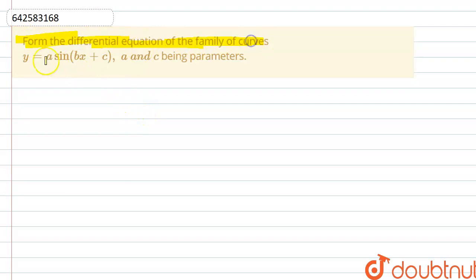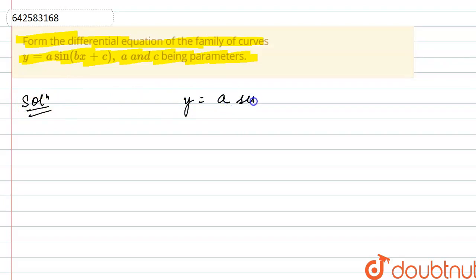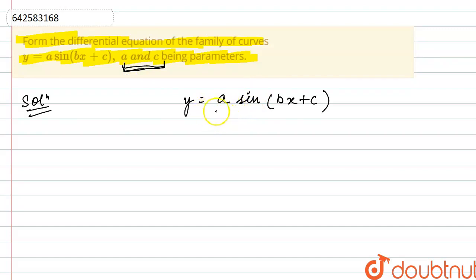Hello friends, the question is: form the differential equation of the family of curves y = a·sin(bx + c), where a and c are only the parameters. So we are given the equation y = a·sin(bx + c), and here a and c are parameters, meaning a and c are constants. We need to differentiate this equation only twice to find the differential equation of the family of curves.